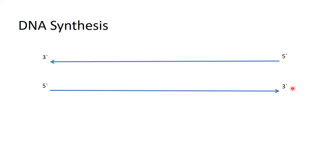We should know also that the elongation of a DNA strand goes always from 5' to 3'. It's always in this direction — there is no way that DNA synthesis can go in the other direction.